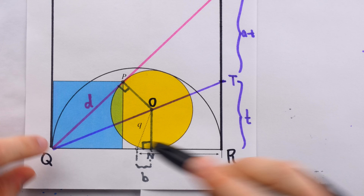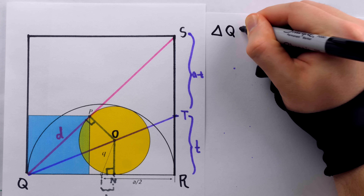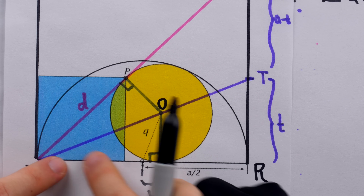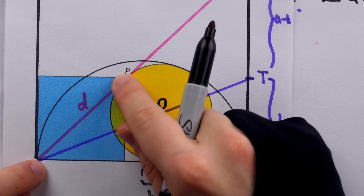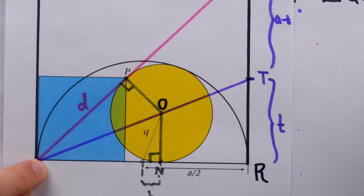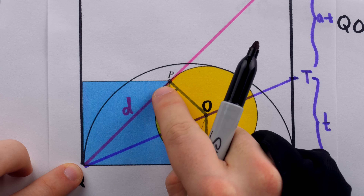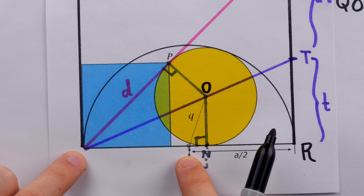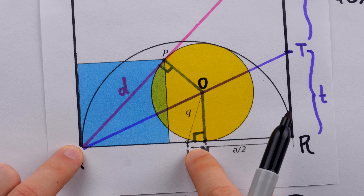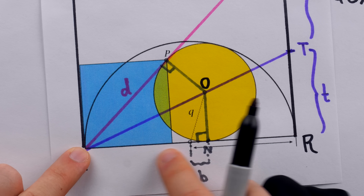We know that triangles QOP and QON are congruent by side-angle-side. These sides are tangents from the same exterior point, so they are congruent. Then these angles are right angles, and these sides are radii of the same circle, so they are congruent as well. This means that the length of D, the diagonal of the blue square, is A over 2 plus b — that is, the radius of the semicircle A over 2, plus this little distance b. So the diagonal of the blue square is A over 2 plus b.